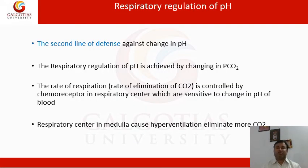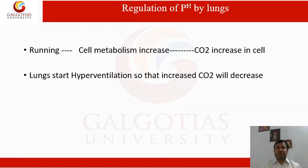The respiratory regulation of pH is achieved by changes in the partial pressure of carbon dioxide. The rate of respiration is controlled by chemoreceptors in the respiratory center, which are sensitive to changes in blood pH. The respiratory center in the medulla causes hyperventilation, which eliminates more carbon dioxide. For example, when running, metabolism increases and more carbon dioxide is produced. The lungs start hyperventilation to remove the excess carbon dioxide, thereby regulating pH.